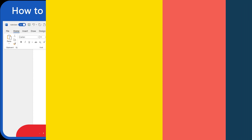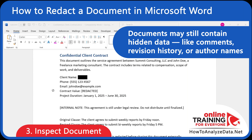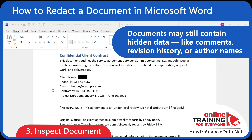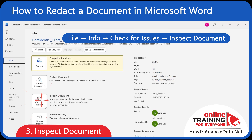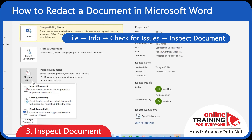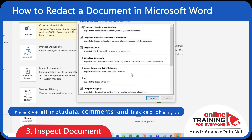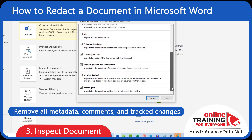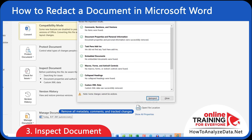Even after redacting visible text, documents may still contain hidden data, like comments, revision history, or author names. Let's clear that too. Navigate to File, Info, Check for Issues, and Inspect Document. This allows us to run the Document Inspector to remove all metadata, comments, and track changes.